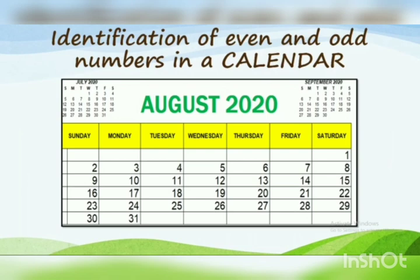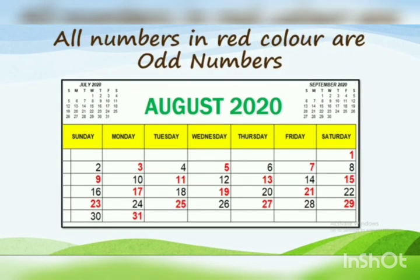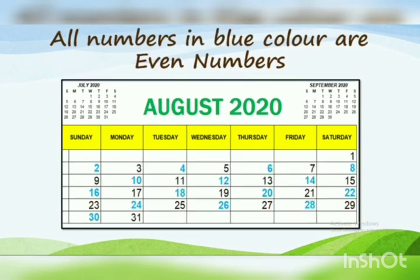Next, here we can see a calendar. In this calendar, we have to identify the even and odd numbers. This is the calendar of August 2020, with numbers from 1 to 31. You can see that some numbers are marked in red — they are odd numbers, because numbers ending with 1, 3, 5, 7, or 9 are odd. The digits in blue belong to the category of even numbers, because even numbers end with 0, 2, 4, 6, and 8.